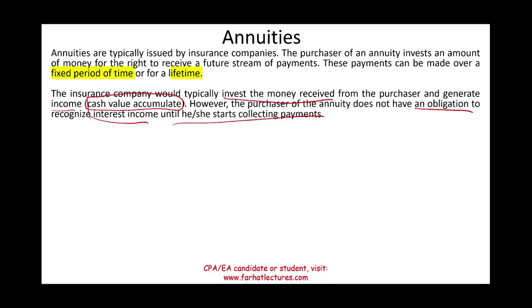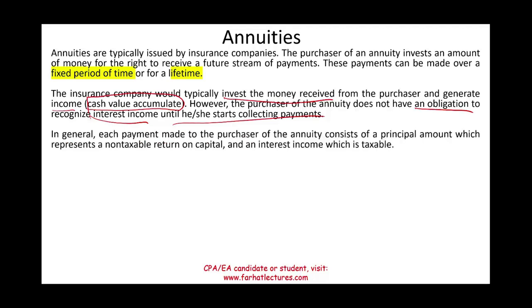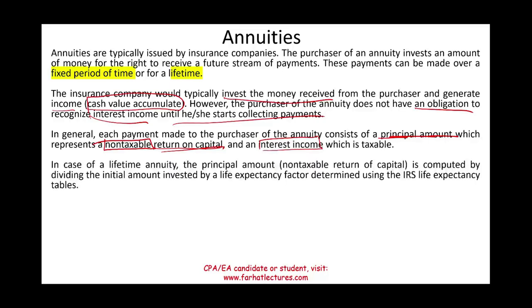In general, each payment made to the purchaser of an annuity consists of two components: a principal amount, which represents a non-taxable return of capital, and an interest component, which is the taxable amount. We'll look at different scenarios to illustrate how to split each payment between these two components.